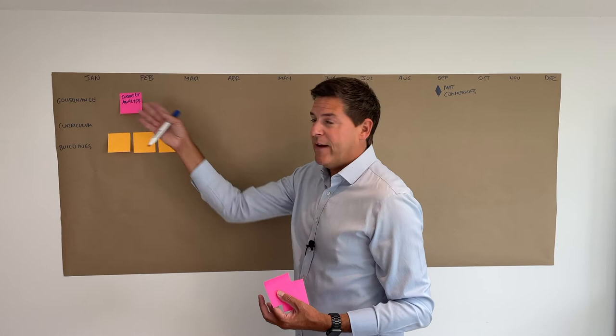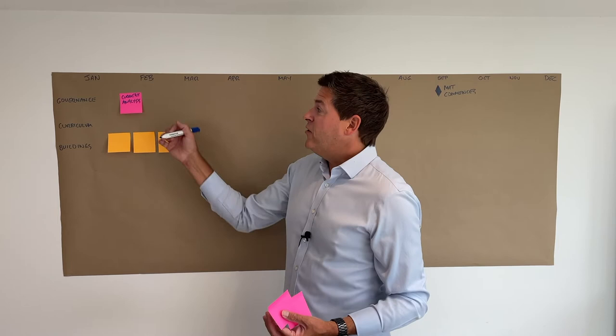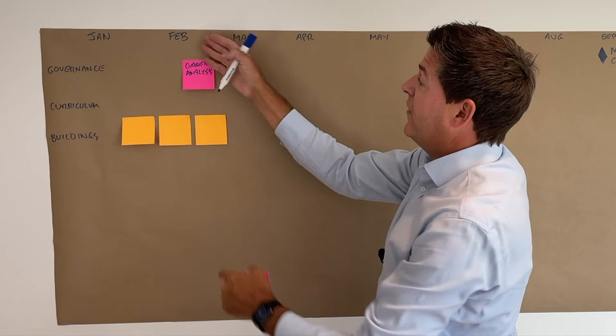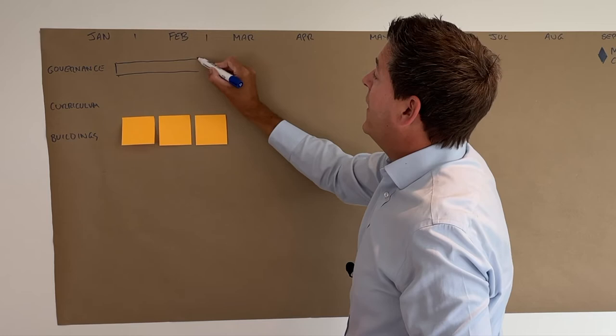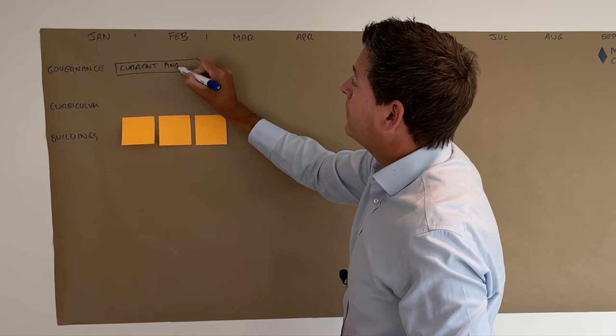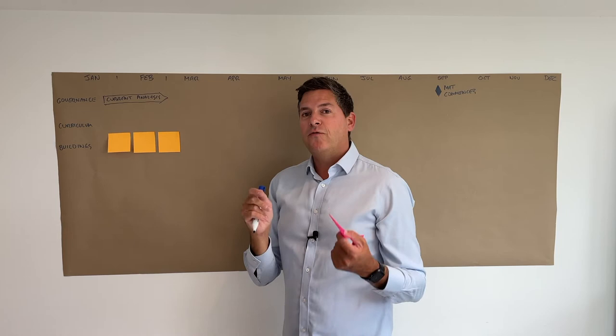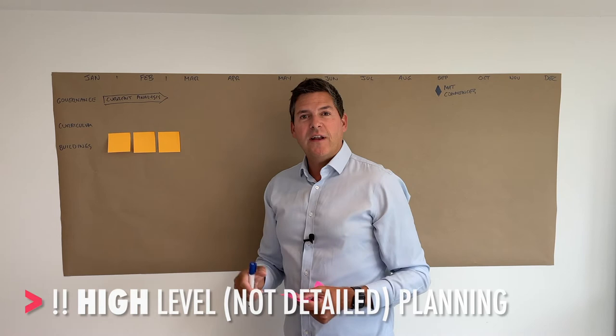You can either use a milestone date — say, end of February — or put in a whole duration as an activity bar and write 'current analysis' across it. The first thing you'll notice is we are not doing detailed project planning here; this is more strategic-level project planning, which is useful to do with the team as a whole. After one of these sessions, you'll want to go away and get the teams to spend more time thinking through the detail.